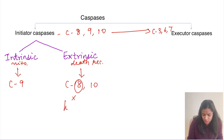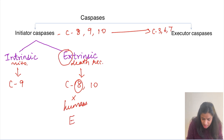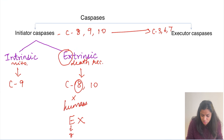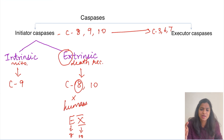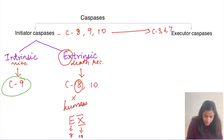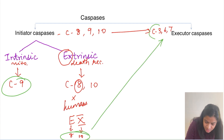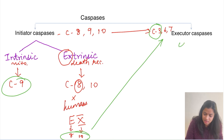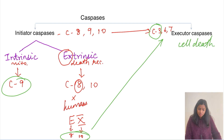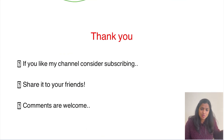Note: caspase 8 is not present in humans — caspase 10 is the one present in humans. A mnemonic: take the first two letters of 'extrinsic' — E looks like the starting letter of 8, and X resembles the Roman numeral 10 — so extrinsic pathway activates caspases 8 and 10, intrinsic activates caspase 9. Both then activate executor caspases 3, 6, and 7, of which caspase 3 is most important. When executor caspases are activated, cell death by apoptosis results.